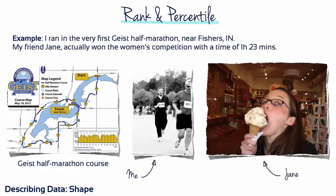For example, I ran in the very first Geist Half Marathon near Fishers, Indiana. My friend Jane actually won the women's competition with a time of one hour and 23 minutes. That's me in the middle, runner 1186, and this is Jane giving that ice cream cone big likes.